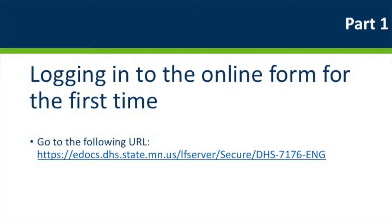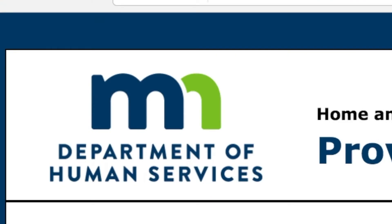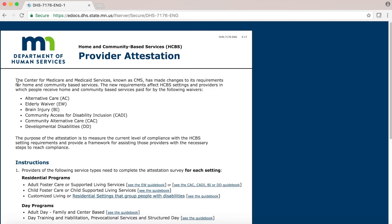Let's get started with our first tutorial, logging into the online form for the first time. The first thing you need to do is open a browser and go to the following URL: www.https//edocs.dhs.state.mn.us. This URL will bring you to the online attestation form, which has the Minnesota Department of Human Services logo in the upper left-hand corner, and has the following title at the top: Home and Community Based Services (HCBS) Provider Attestation.